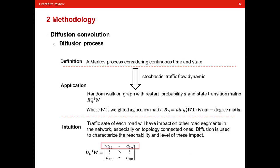Now we will have a closer look on the methodology. At first, we will have a review on diffusion convolution. Literally, diffusion process is a Markov process considering continuous time and state. And this paper wants to model the stochastic traffic flow dynamics with diffusion process. What they do is to try to use a random walk on graph with restart probability alpha and state transition matrix. And in order to model the stochastic traffic flow dynamics, the state transition matrix is calculated based on a degree matrix multiplied with a weighted adjacency matrix.